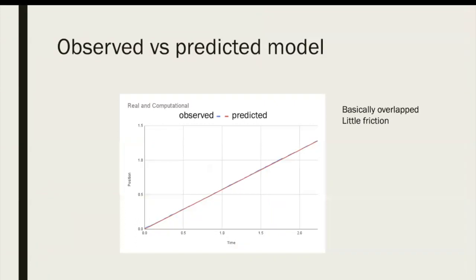Then I plot the graph, the observed one and also the predicted one from the model. Basically they are overlapped. There's one blue line and one red line. The red line is correct because it's the predicted one and the blue line is basically a little bit off, because that is what I observed. I think the reason they are overlapping is because of really little friction on my smooth table.